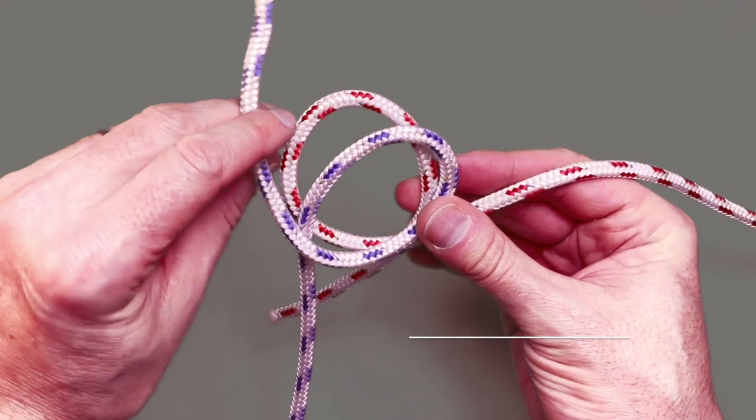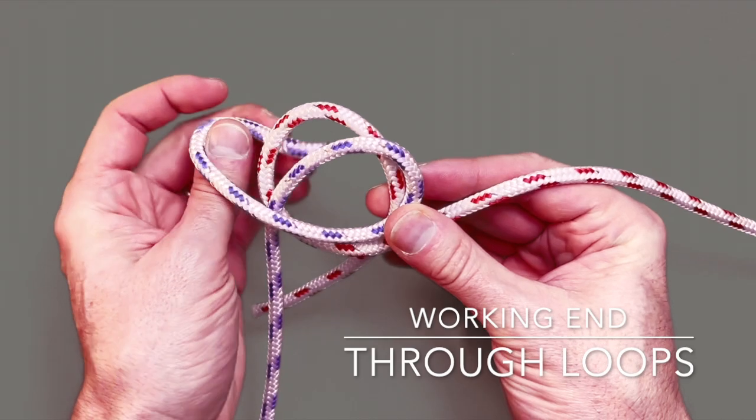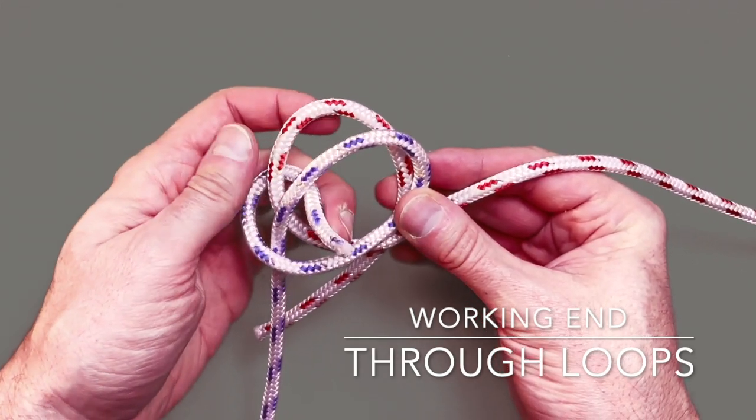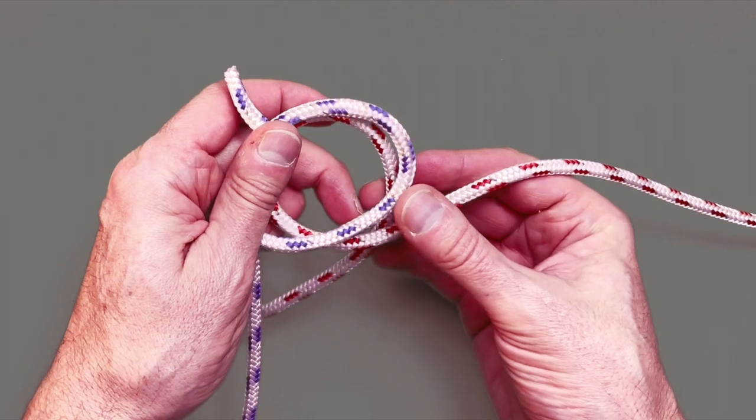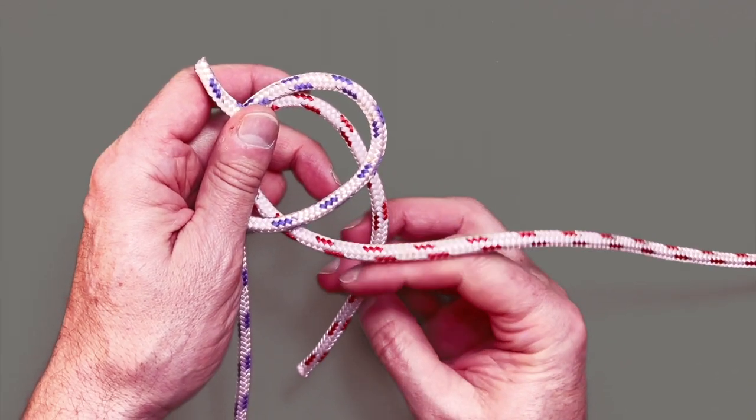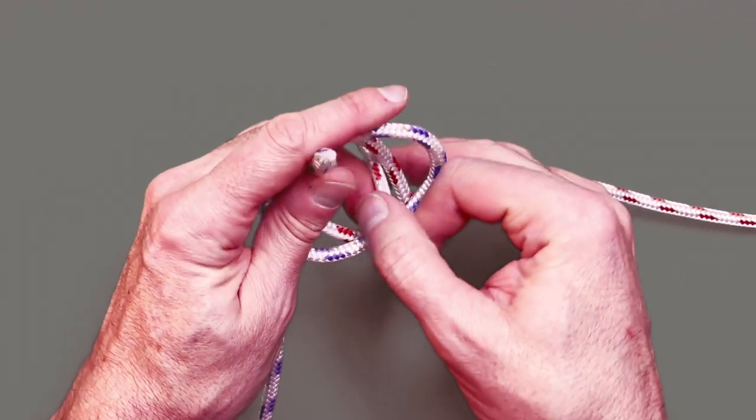Step four, take the working end of your six and loop it around up through both loops, then do the same with the nine going the opposite way.